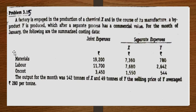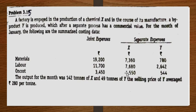Hello everyone, this is Gracie. In this video we will be discussing process costing problem 3.15. A factory is engaged in production of chemical X, and in the course of its manufacture a by-product Y is produced which, after a separation process, has a commercial value. For the month of January, the following summarized costing data is given: joint expenses and separate expenses for materials, labor, and on-costs. The output for the month was 142 tons of X and 49 tons of Y, and the selling price of Y averaged rupees 280 per ton.